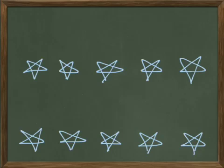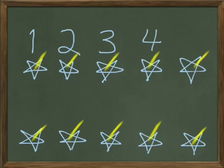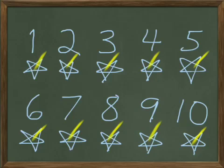Let's count these up — let me get my highlighter. Here we go, starting up here on the top left: one, two, three, four, five, six, seven, eight, nine, ten. Ten stars. And just like before, let's write the numbers above each star. Star number one, two, three, four, five, star number six down here on the bottom left, and then star number seven, number eight, number nine, and star number ten. We got all ten.